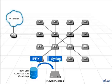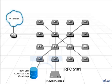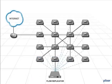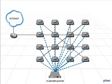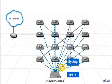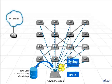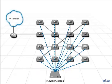Some flow replicators can also act as a syslog to IP fix gateway. IP fix is the proposed standard for NetFlow. As the flow replicator receives syslogs from routers, servers, and firewalls, it can parse the logs, then repackage them as structured IP fix datagrams. The flow replicator will then send the messages to the collector.